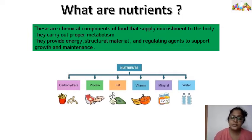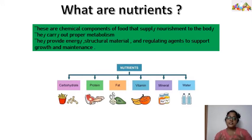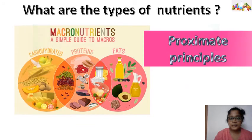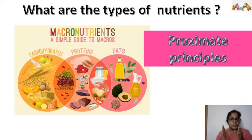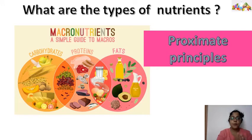Nutrients are basically carbohydrate, protein, fat, vitamin, mineral, and water. If we classify the types of nutrients, we will have two types. One is the proximate principles of food, or the macronutrients, under which are carbohydrate, protein, and fat.